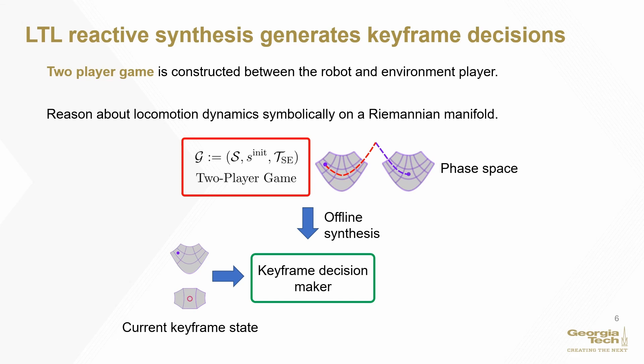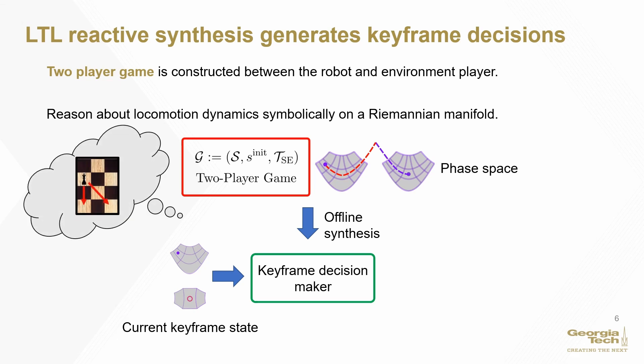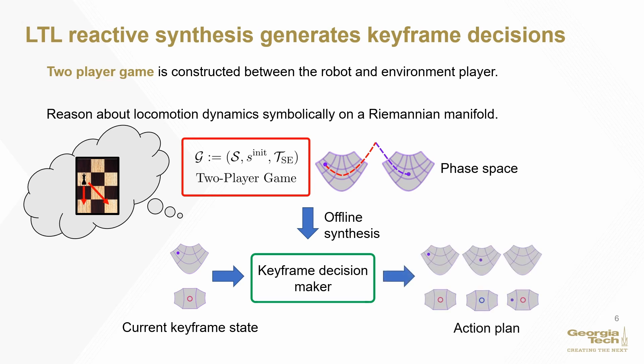The task planning layer operates as follows. First, we construct a two-player game between the environment and the robot with reactive synthesis offline. Imagine this like a game of chess where the queen must move positions based on its dynamics. The decision-makers then provide desired transition actions based on the current state to the behavior tree and motion planner.